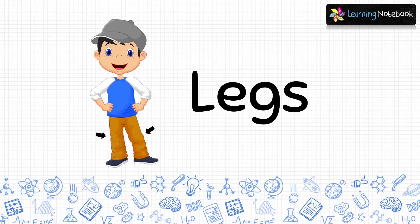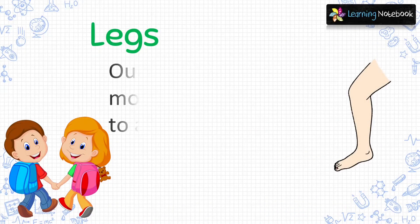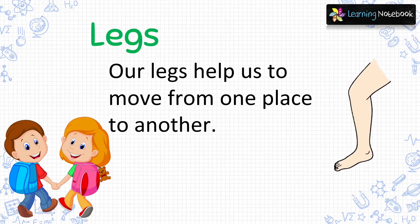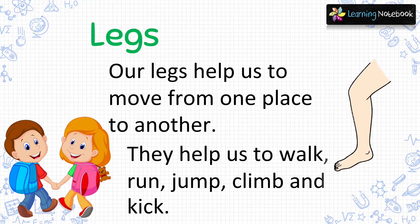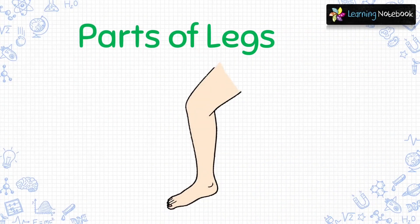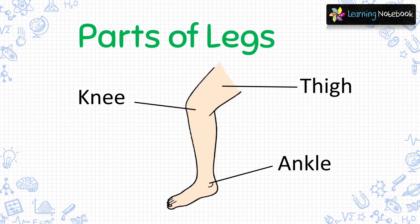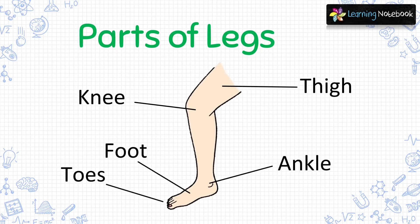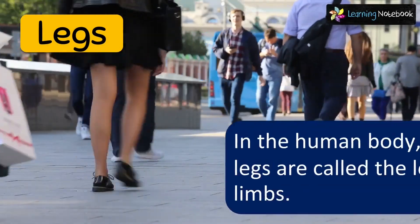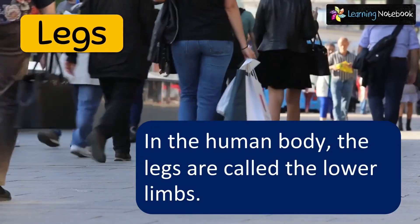Now, let's talk about the next external body parts which are legs. Our legs help us to move from one place to another. They help us to walk, run, jump, climb and kick. Let's see parts of legs: this is a thigh, here is a knee, then there is an ankle, foot and toes. These are parts of our legs. In the human body, the legs are known as the lower limbs.